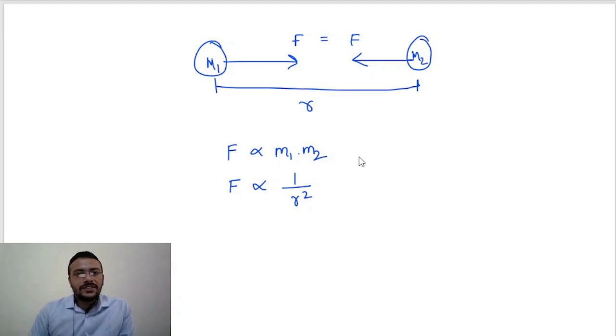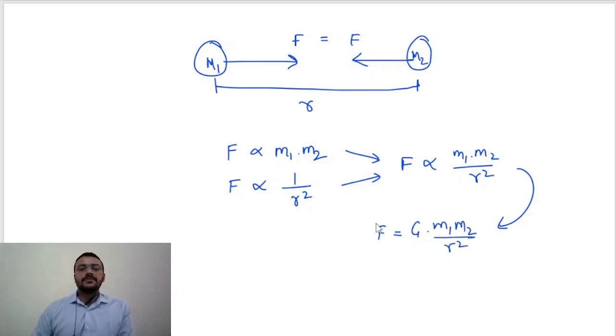Both of these relations are very important because when we combine both of these relations, we will get an equation: force is directly proportional to m1 m2 by r square. And when we are going to release this proportionality sign, we will get the equation F equals G into m1 m2 by r square.